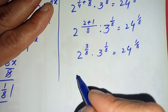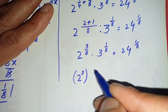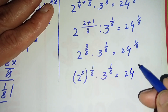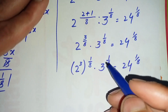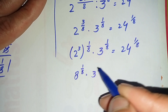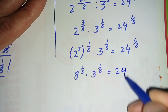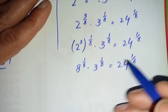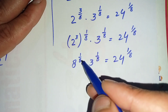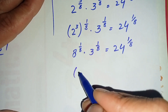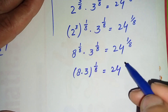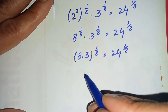We can write 2 raised to power 3/8 as (2 raised to power 3) raised to power 1/8, times 3 raised to power 1/8, equals 24 raised to power 1/8. Since 2 raised to power 3 is 8, this becomes 8 raised to power 1/8 times 3 raised to power 1/8 equals 24 raised to power 1/8. Using the exponential product rule (same power), we combine: 8 times 3, all raised to power 1/8.